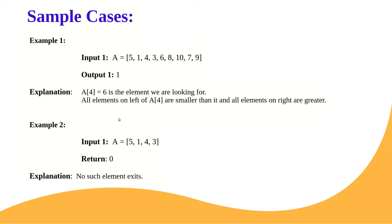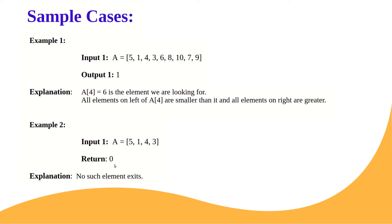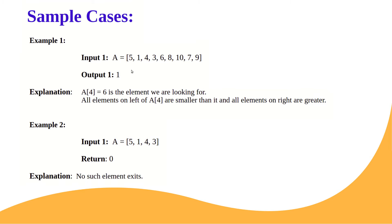Example 2: array is [5, 1, 4, 3]. We check only the two possible answers (ignoring corners). Check index 1 (value 1): its left is 5, which is not smaller than 1, so 1 cannot be the answer. Check index 2 (value 4): its left contains 5, which is greater than 4, so 4 cannot be the answer either. No valid element exists, so we return 0.